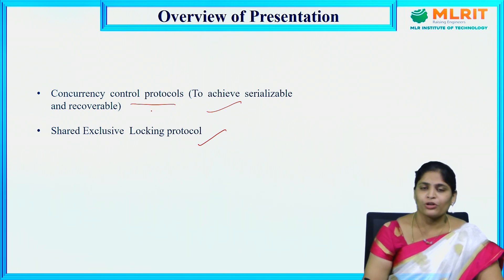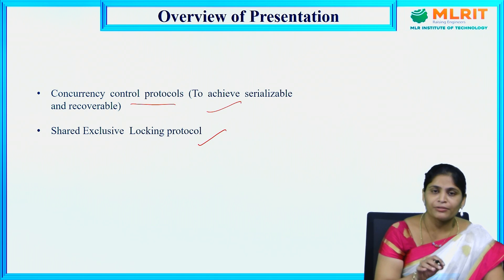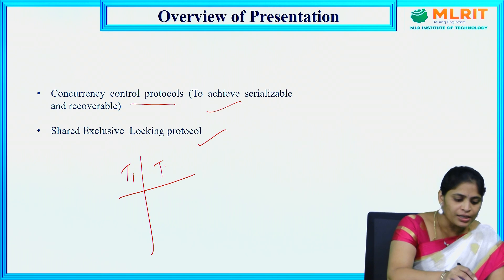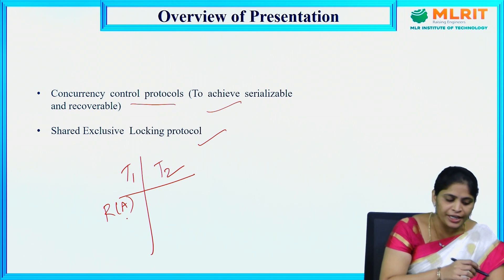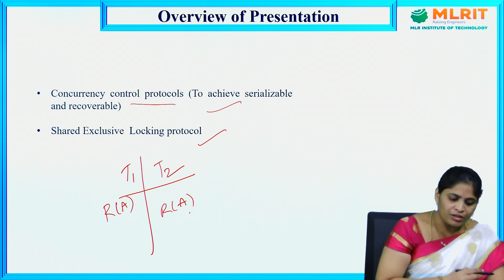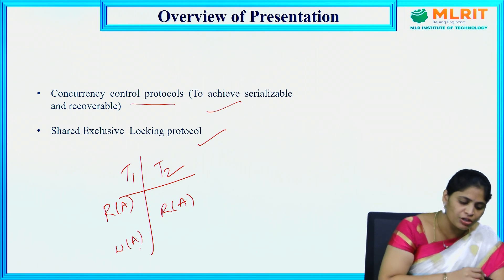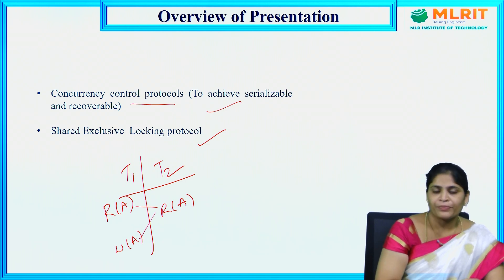What is concurrency control protocols? We all know what concurrency is. Here, if we are performing transactions in a concurrent manner — that is, not in a serializable manner — let us deal with a simple example. Consider two transactions. Here I am performing a read operation on data item A, then again a read operation on data item A in transaction T2, and again a write operation on data item A in transaction T1. This is what concurrency means — we are not performing the transactions in a serializable manner.